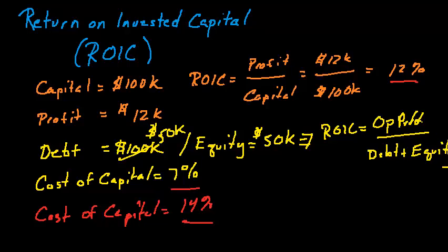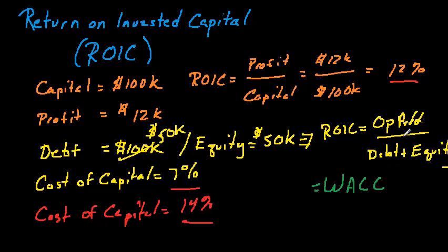Because there are two components to capital, there are a couple of different costs to consider. There's a cost on the debt — that's the interest rate — and there's a cost on the equity as well. There are also different interest rates for different debt maturities. The actual cost used is called the WACC — the weighted average cost of capital. It's the average of these different costs for the different debt maturities and so on, weighted by how much is debt versus equity.